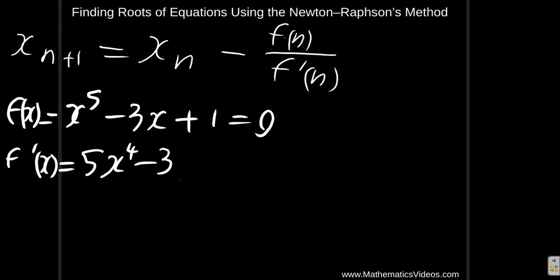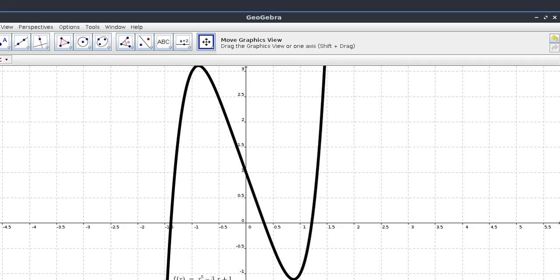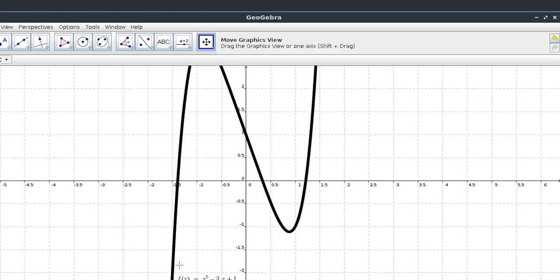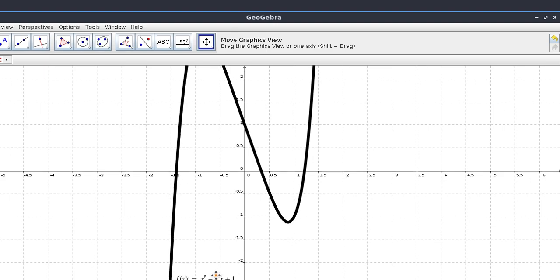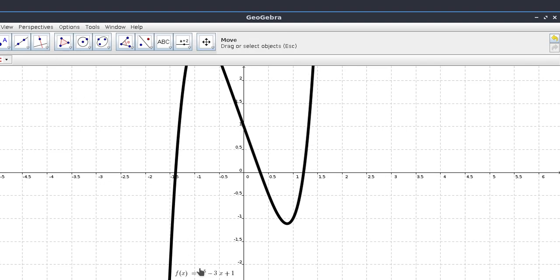We used a value close to the root and then the Newton-Raphson method caused our answer to get closer and closer to the true root. To see it, we used a graph of the function f of x equals x to the 5th minus 3x plus 1.